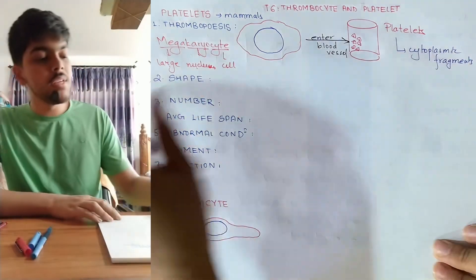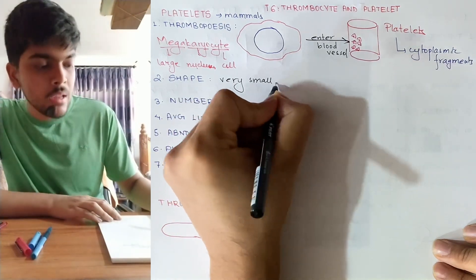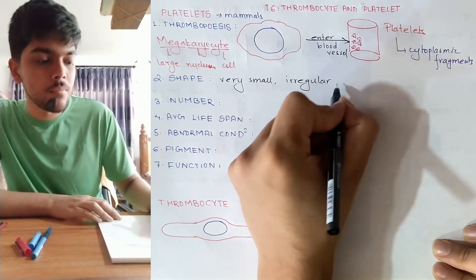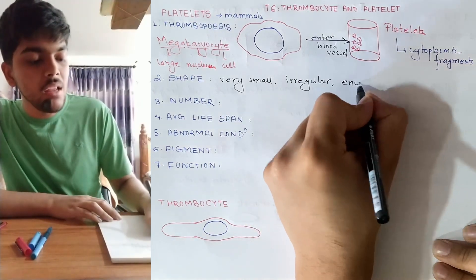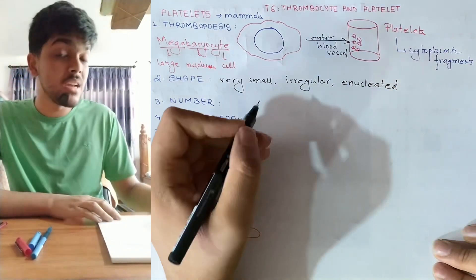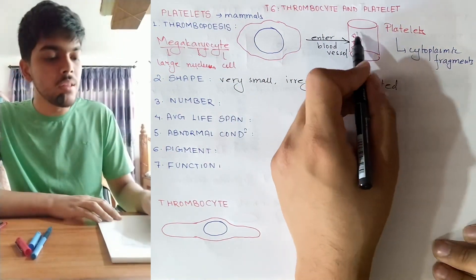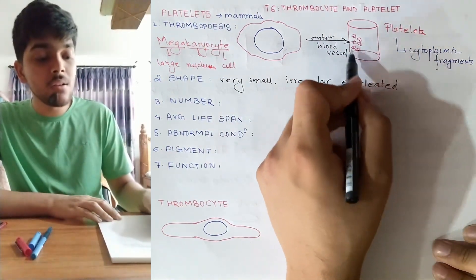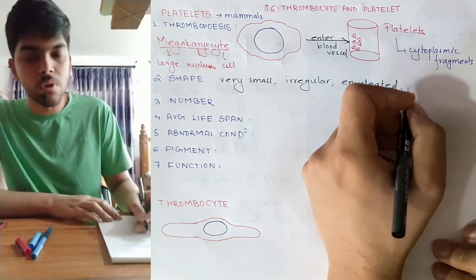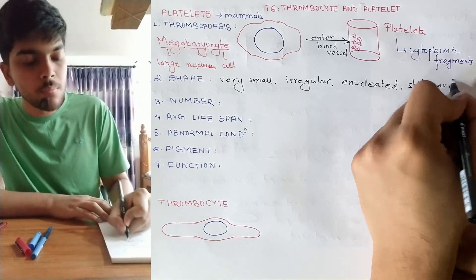The second point is shape. Platelets are very small in size and they don't have any definite shape — they are irregular. Not only that, they are enucleated. Platelets come from the megakaryocyte, which contains a huge nucleus, but when it breaks down, the resulting fragments no longer have any nucleus. Platelets are also sticky and fragile, which relates to their role in blood clotting.